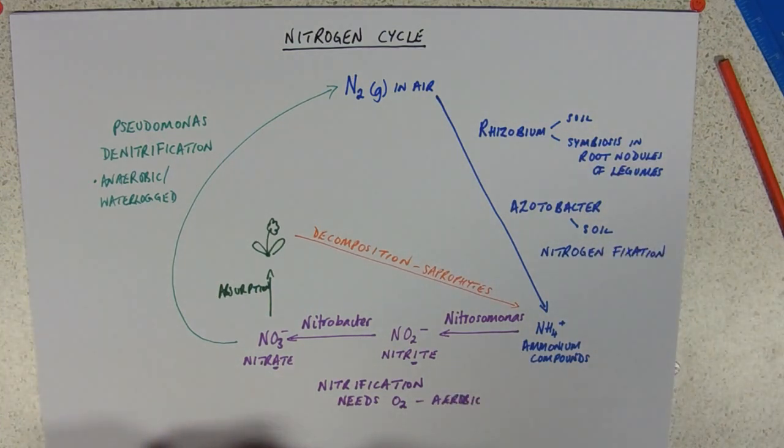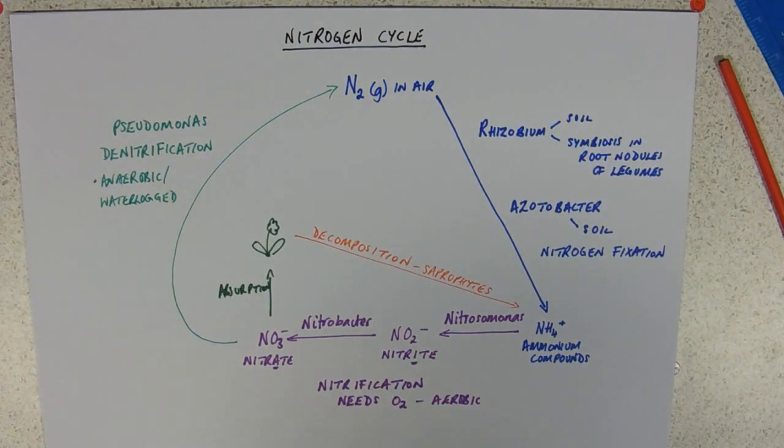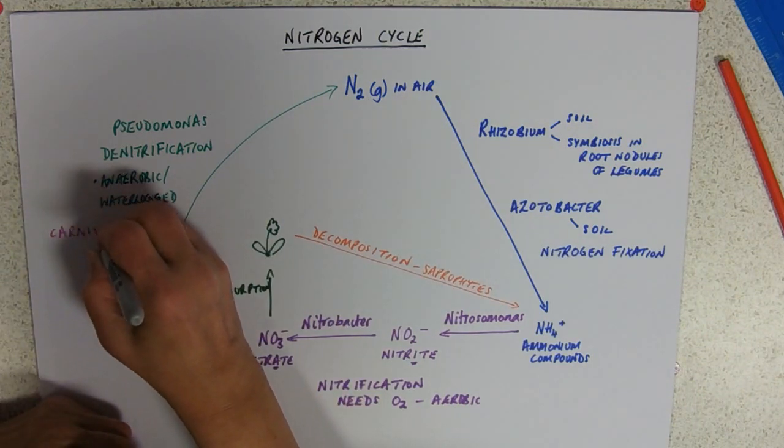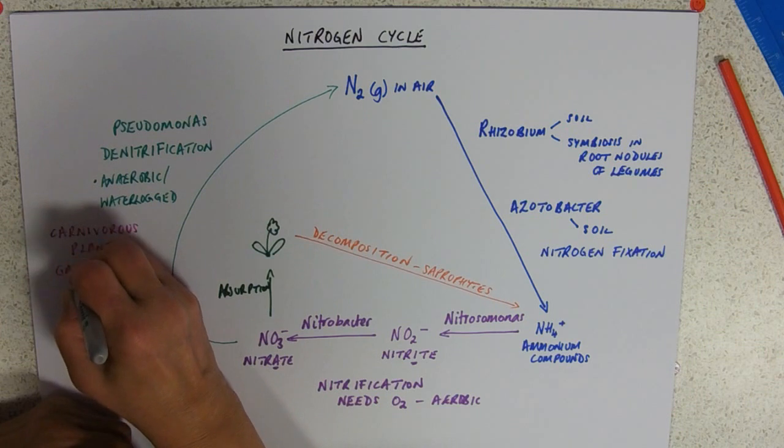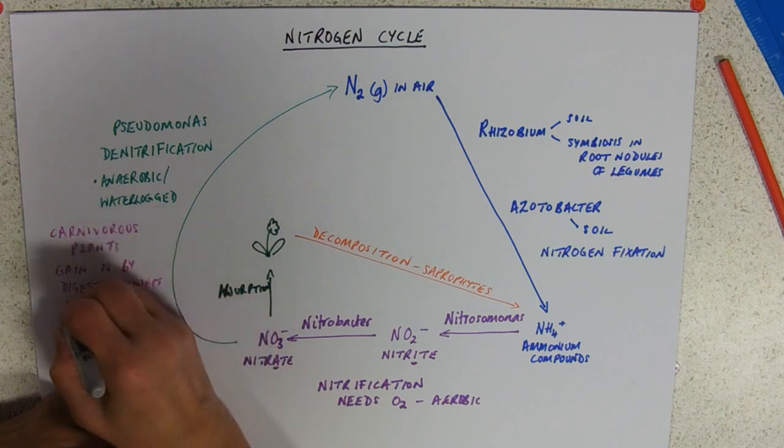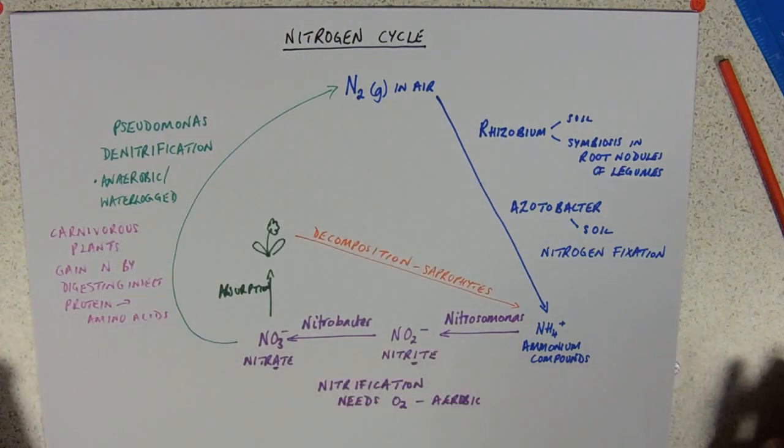That already looks complicated enough. However, you also need to be able to interpret information. So, for example, if you've got a waterlogged soil, you might get carnivorous plants. Our carnivorous plants, things like sundew that you find up on the moors. Carnivorous plants gain nitrogen by digesting insects. They digest them, they get the amino acids out and they can use that instead of nitrate, if there's not much nitrate available.